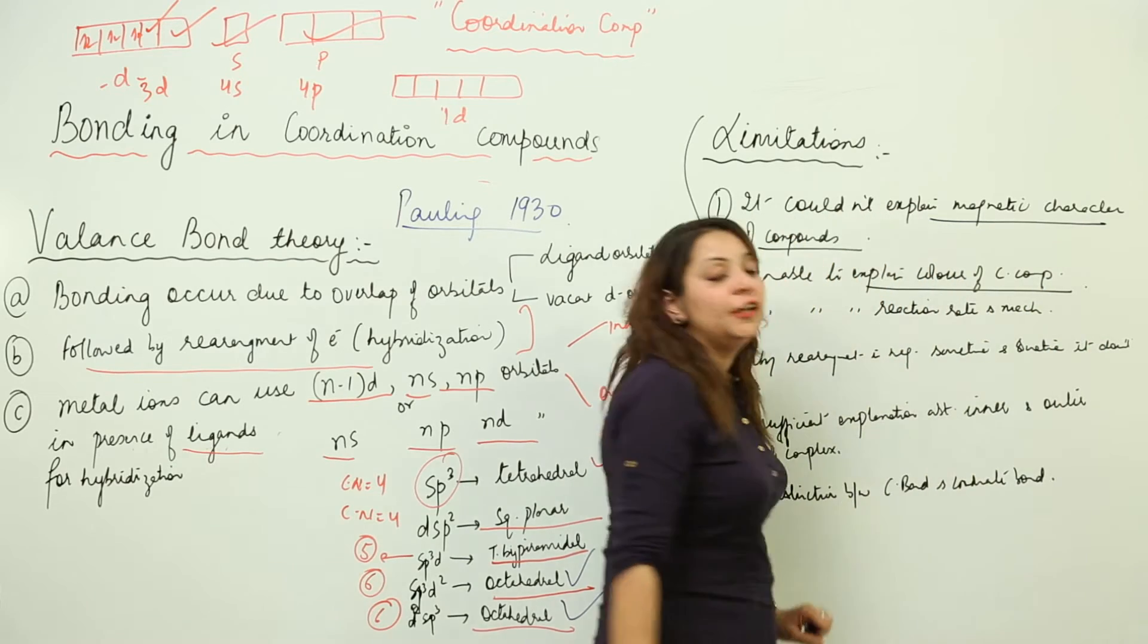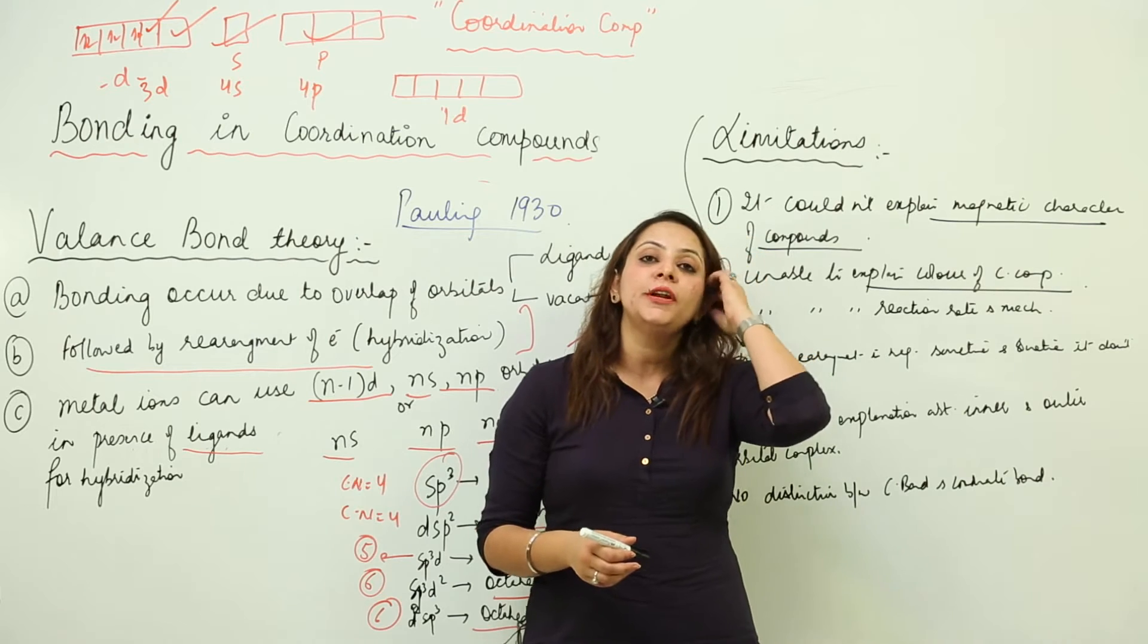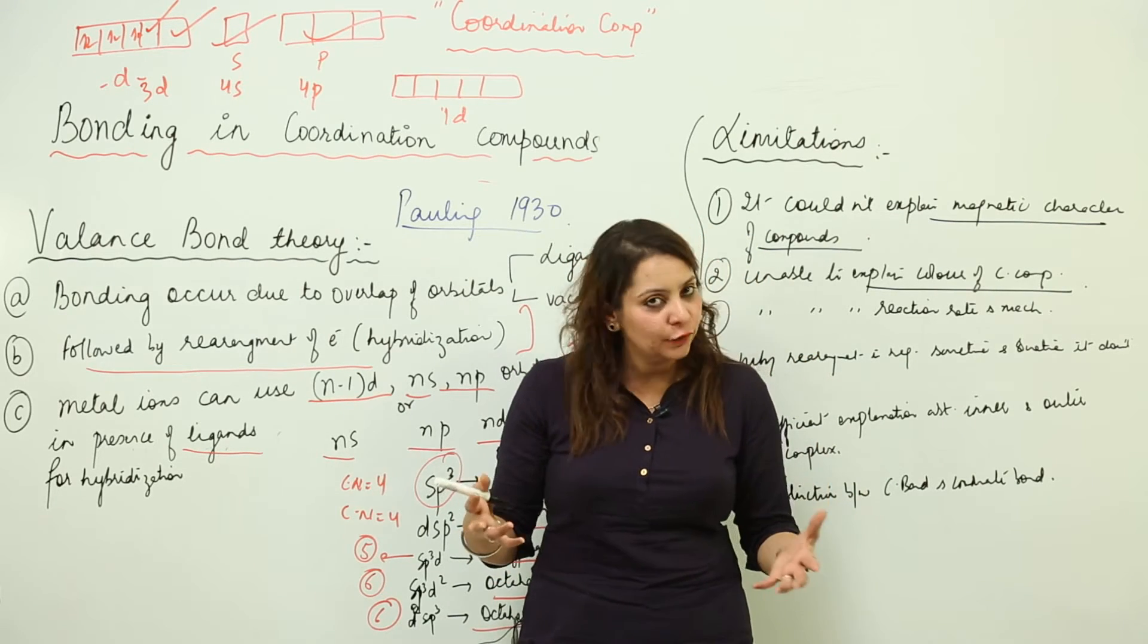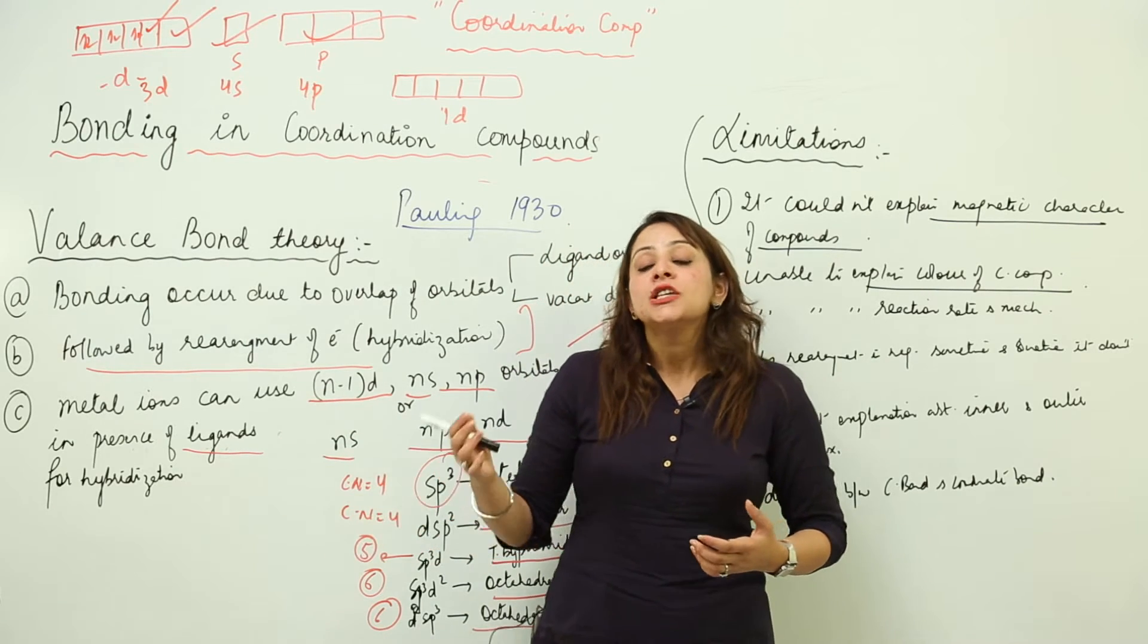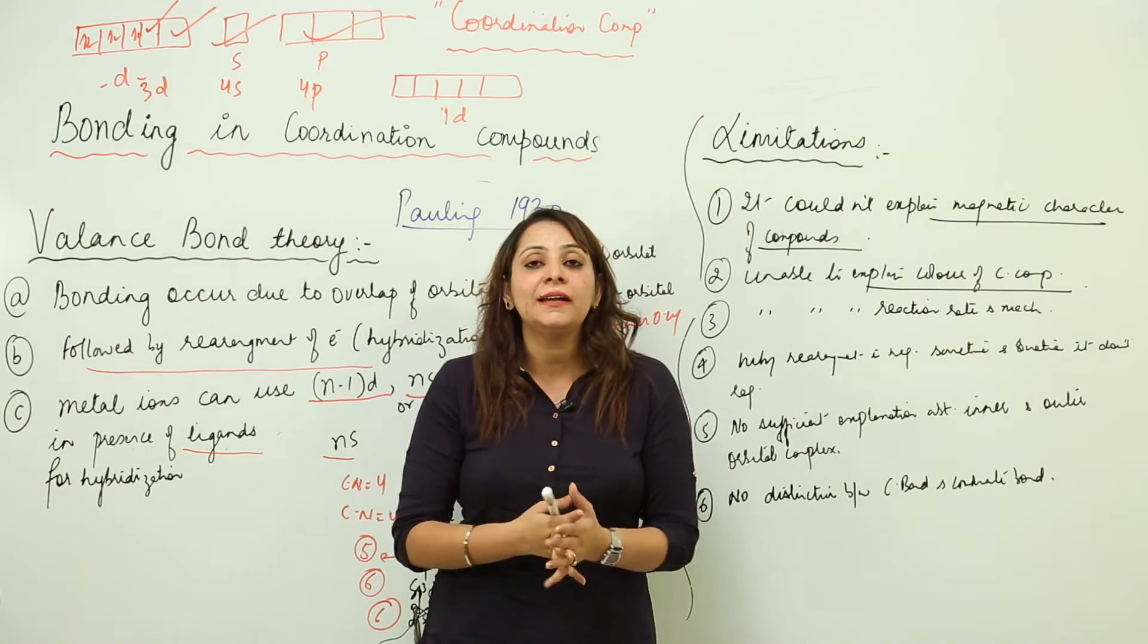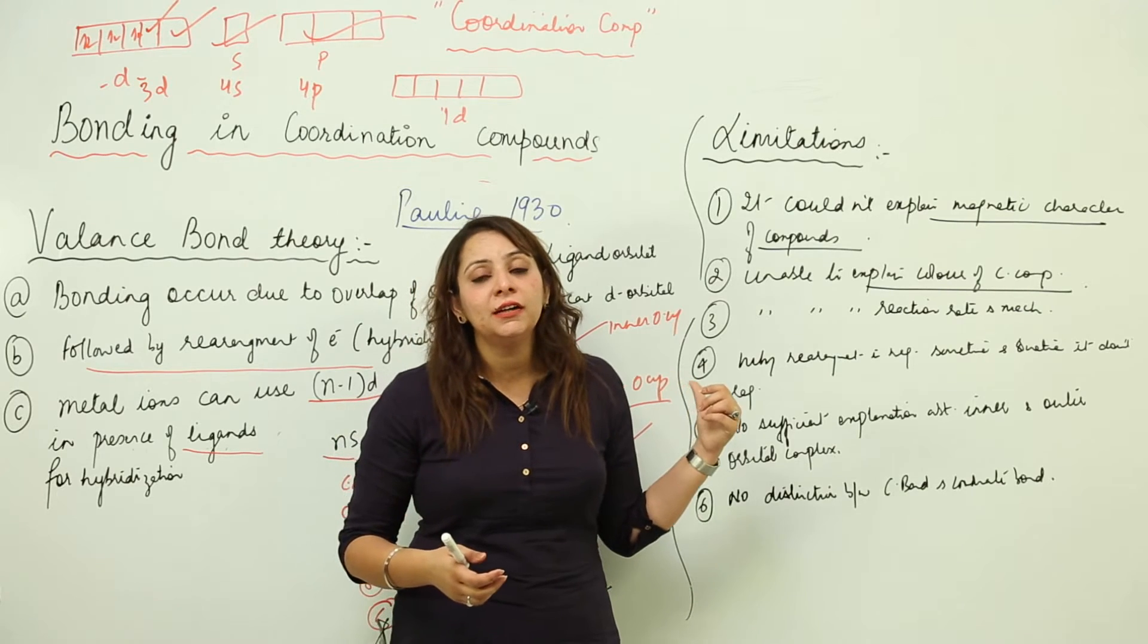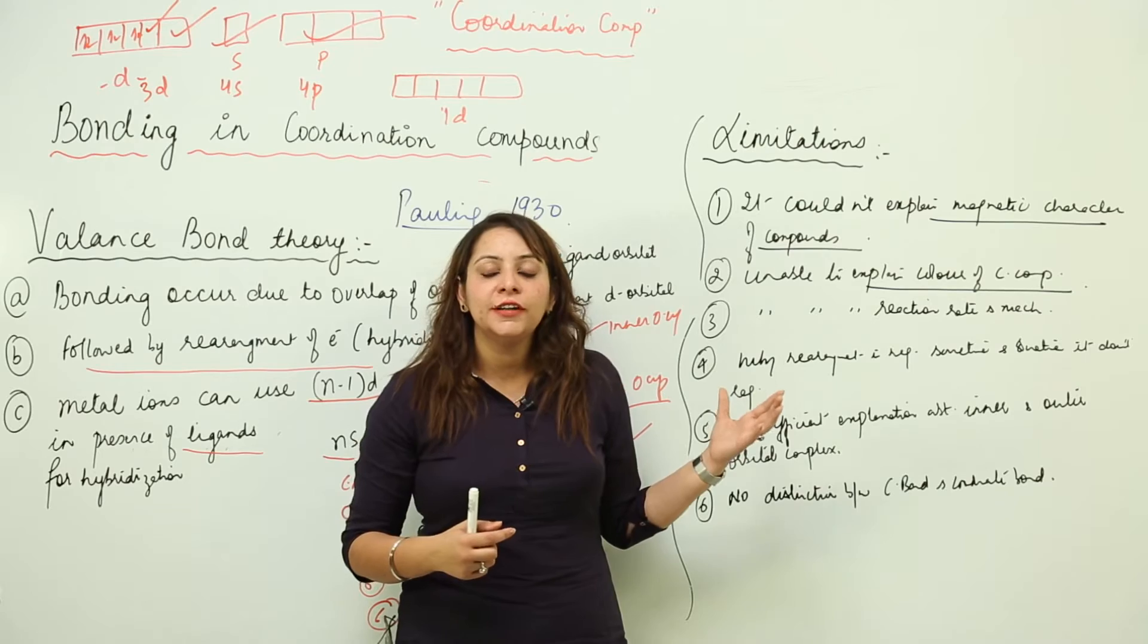Second, it could not explain the color of the coordination compounds. As you all know, color is a characteristic property for coordination compounds. They show a certain kind of excitation due to energy gap. It doesn't focus on that, even though it is a main characteristic property we cannot neglect. This theory should explain something about the color of the compounds, but it doesn't, so it is again a limitation.